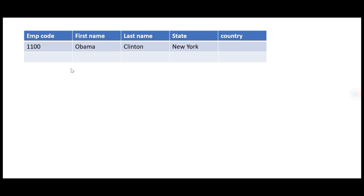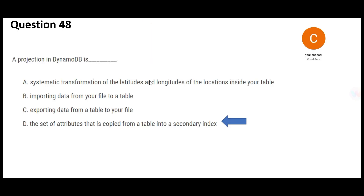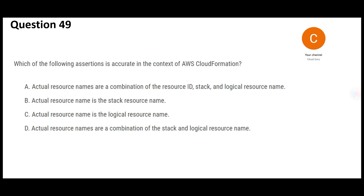So if you have an employee table where employee code is the primary key and state is a non-key attribute, and you want to filter by state, you create an index on state. For example, if Obama and Clinton are from New York, you index on state to efficiently retrieve that. That is the concept of a projection in DynamoDB — creating an index on a non-key attribute.